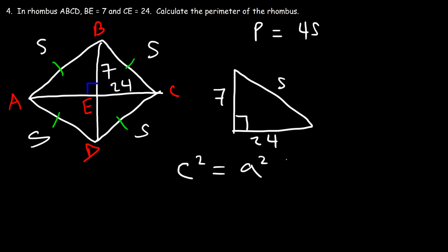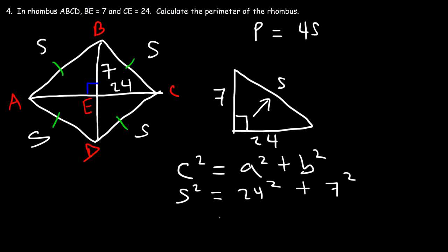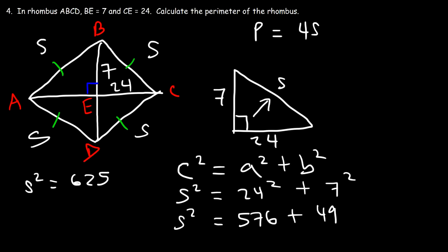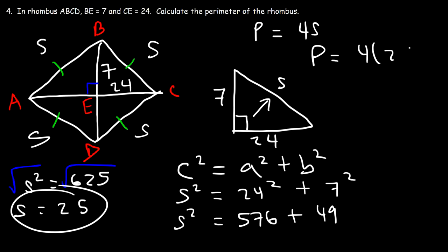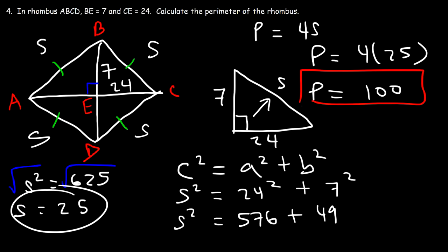c squared is equal to a squared plus b squared. In this case c is the hypotenuse s, a is 24, and b is 7. 24 times 24 is 576, and 7 squared is 49. 576 plus 49 is 625. Now let's take the square root of both sides. The square root of 625 is 25. So now we can calculate the perimeter: 4s, or 4 times 25, which is 100. So the perimeter of this particular rhombus is 100 units.